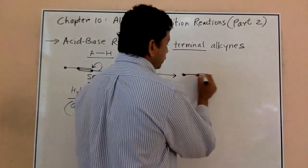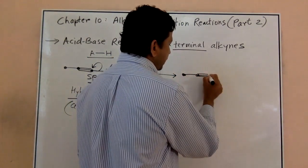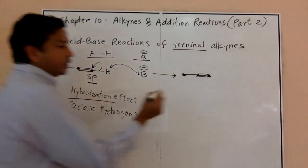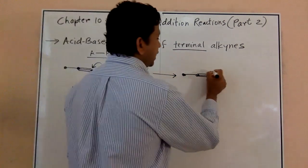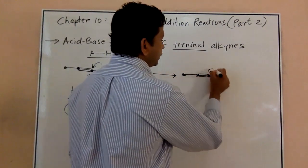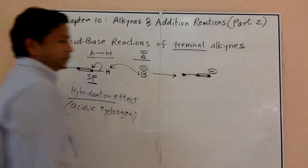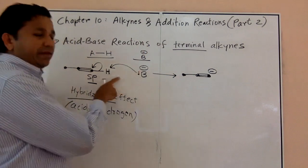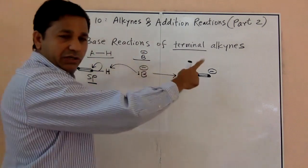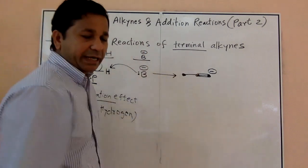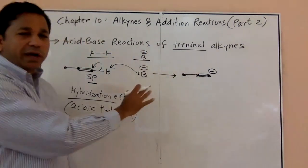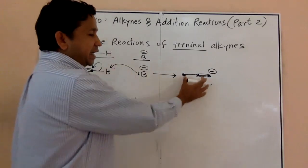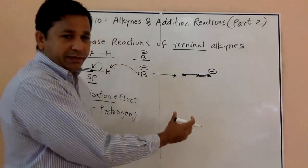You have those two carbons, and that terminal carbon will become negative — that's your product, the carbanion. You also have HB as your conjugate acid, but we're only writing the product that has carbon in it.